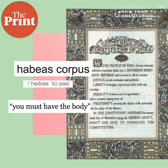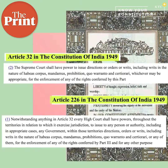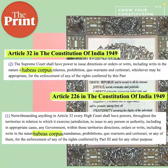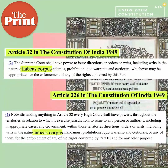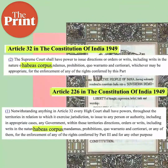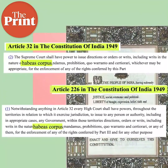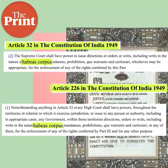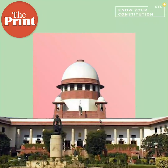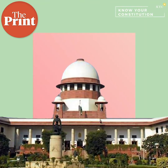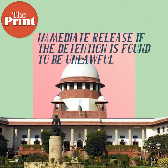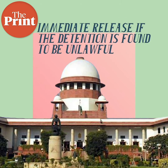In the Constitution, Articles 32 and 226 allow the Supreme Court and High Courts respectively to issue a writ of habeas corpus, which is an order to inform the court about the grounds on which a person is detained. This means the court can ask the authorities to produce the detained person and examine if his detention was legal. It can order immediate release if the detention is found to be unlawful.